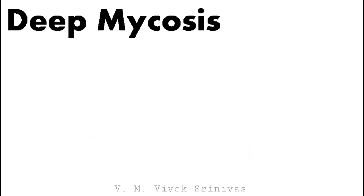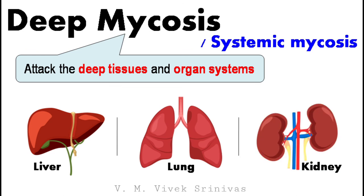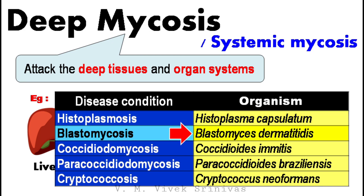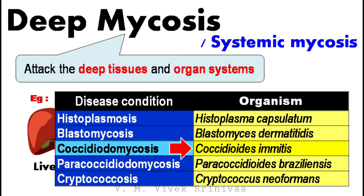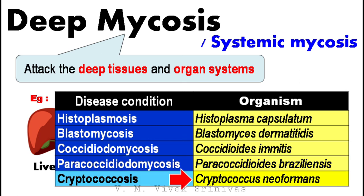Lastly, deep mycosis or systemic mycosis. These organisms infect the deep tissues and organs like liver, lungs, kidney, etc. Disease conditions include histoplasmosis caused by Histoplasma capsulatum; blastomycosis caused by Blastomyces dermatitidis; coccidioidomycosis caused by Coccidioides immitis; paracoccidioidomycosis caused by Paracoccidioides brasiliensis; and cryptococcosis caused by Cryptococcus neoformans.